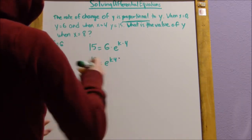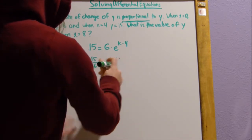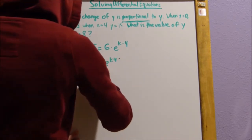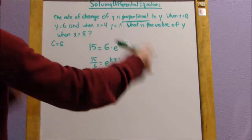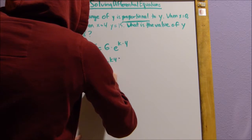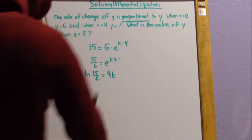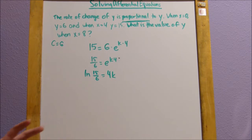Okay, so now we want to isolate 4k. So what we're going to do is we're going to do ln. It's that kind of idea that you can switch it up into a different form. ln of 15 divided by 6 equals 4k.